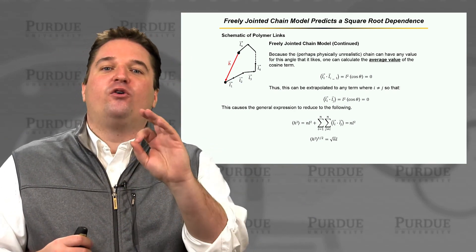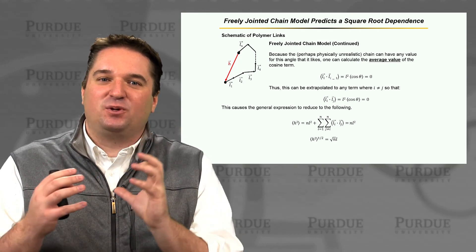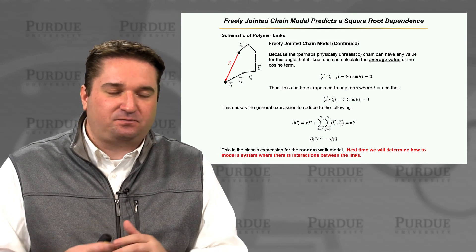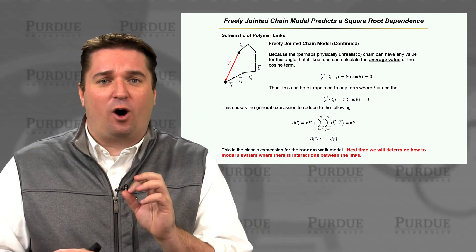The square root dependence will come up over and over again throughout this course. And this is the basic simplest model of how we can start to rationalize why that's the case. And this is the classic expression for what we call a random walk.